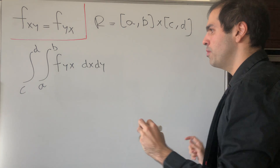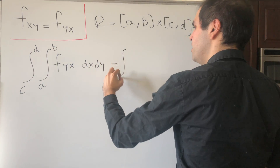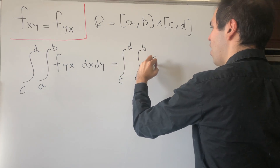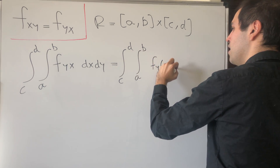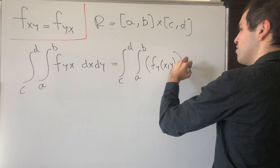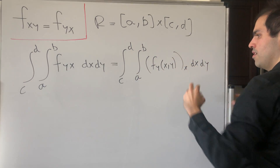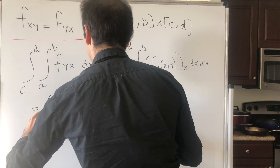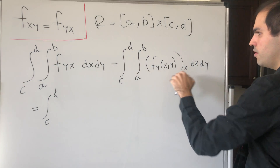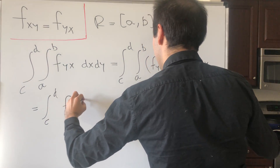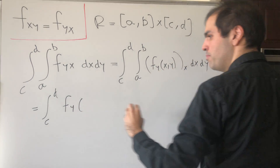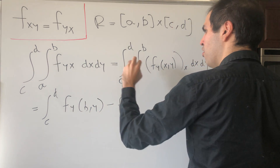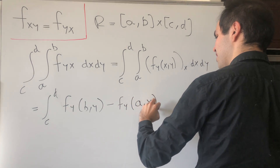By the fundamental theorem of calculus, this just becomes the integral from c to d of the integral from a to b of f_y(x, y) with respect to x, dy. But now you're integrating a derivative, so this just becomes the integral from c to d of f_y(b, y) minus f_y(a, y), dy.